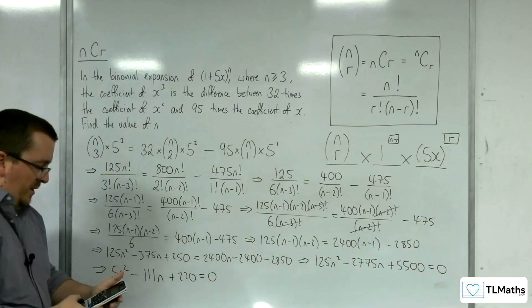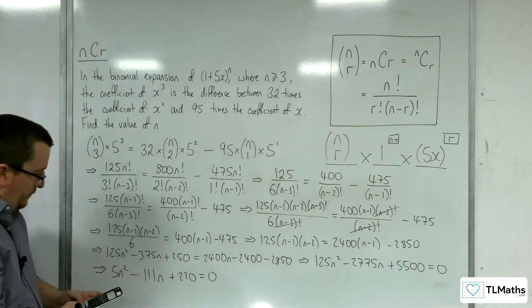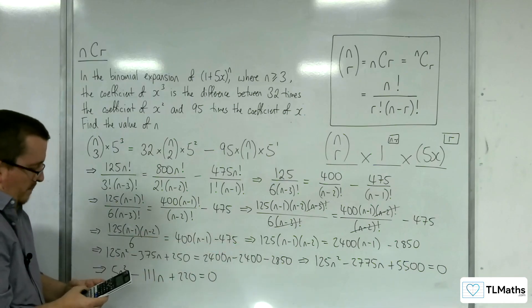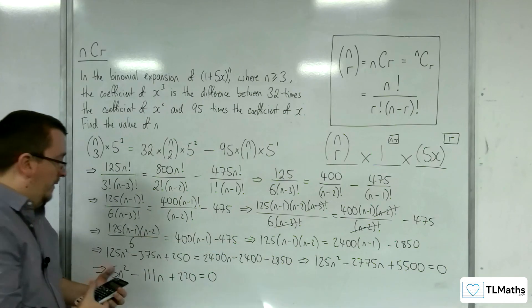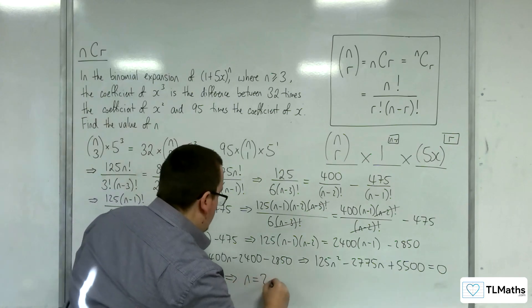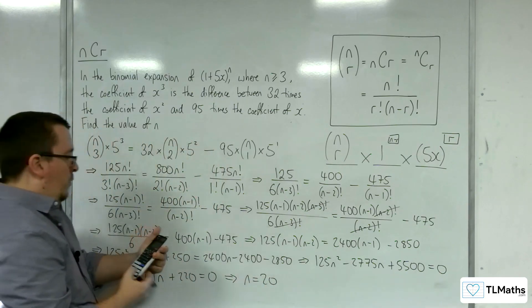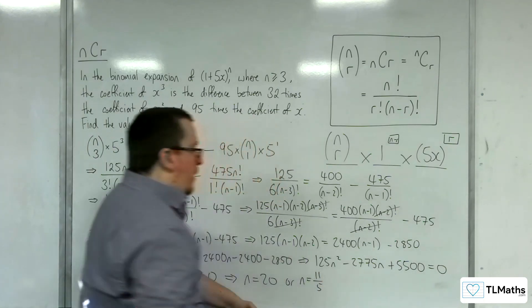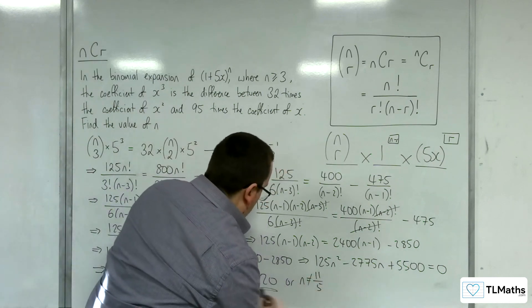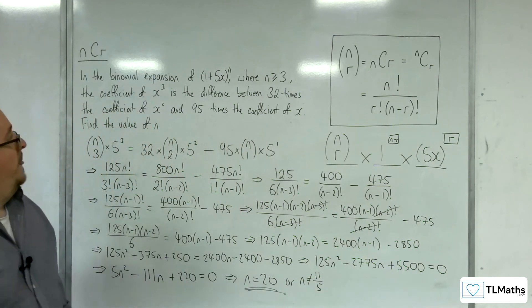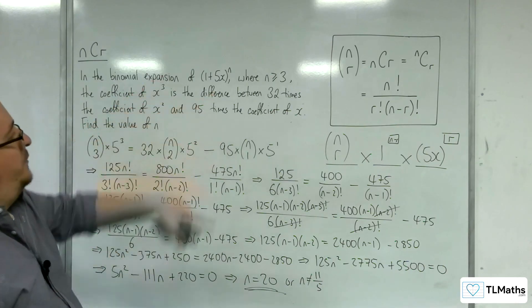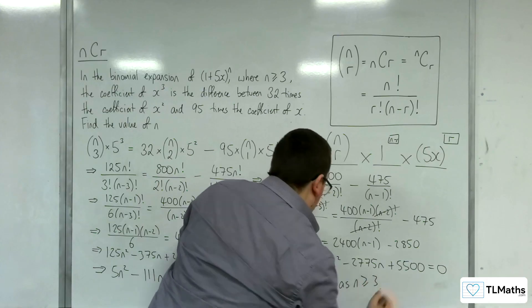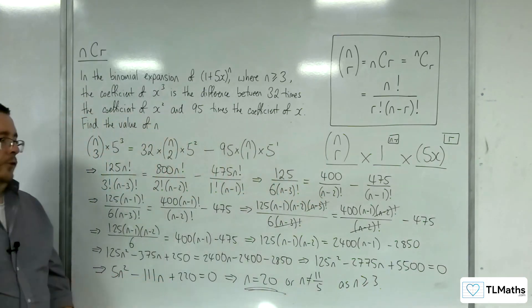So then I'm going to pop this quadratic into my quadratic solver. I mean, I could have done it straight from there, but the point is that you might have got here through other means, other cancellations. So I'm getting n is 20, or n is 11 fifths. Well, n can't be equal to 11 fifths because n has to be a whole number, and we also know n has got to be greater than or equal to 3. So n equals 20 solves this problem.